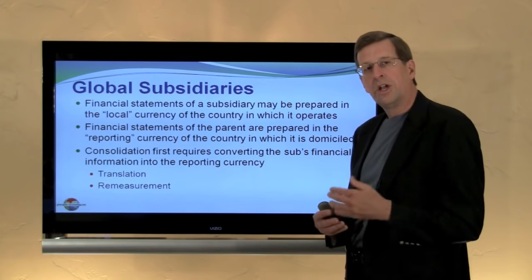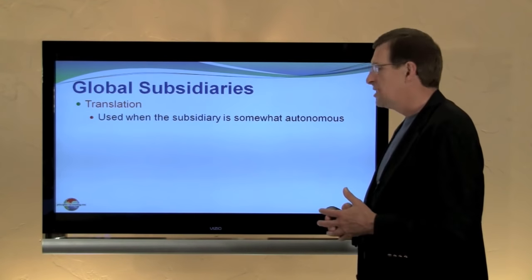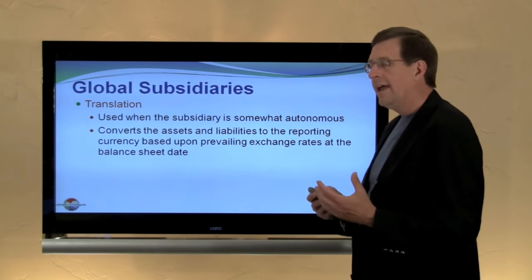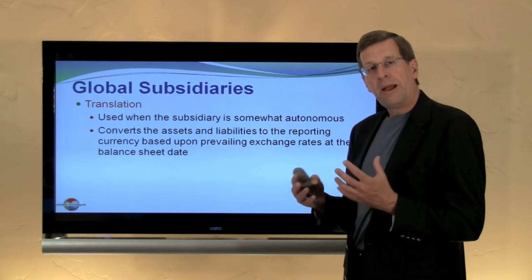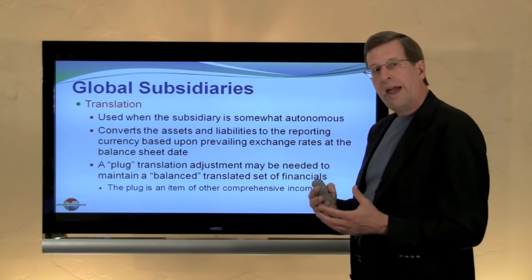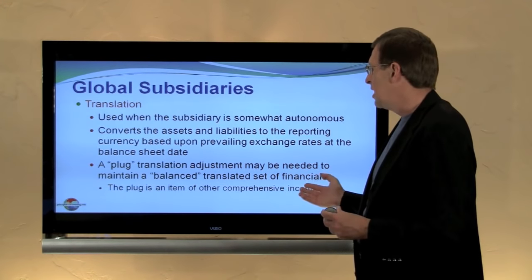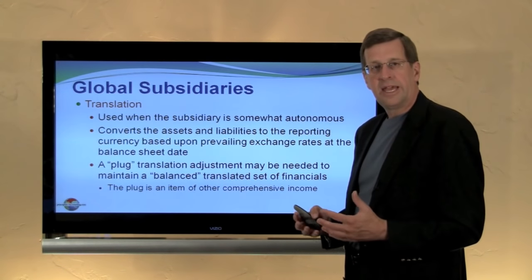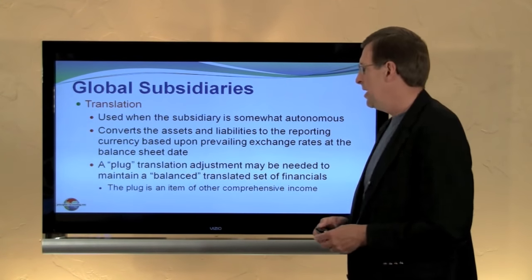There are actually two methods that emerge: translation and re-measurement. Translation is used when the subsidiary is somewhat autonomous — free-standing, self-supporting, generating and reinvesting cash flows. In those cases, we convert the assets and liabilities to the parent's currency based on the prevailing exchange rates at the balance sheet date. This may cause the trial balance of the subsidiary to no longer be in balance, so we might need a plug to balance it. That plug is referred to as a translation adjustment. The cumulative translation adjustment is typically reported as a component of other comprehensive income or part of stockholders' equity, but not operating income.